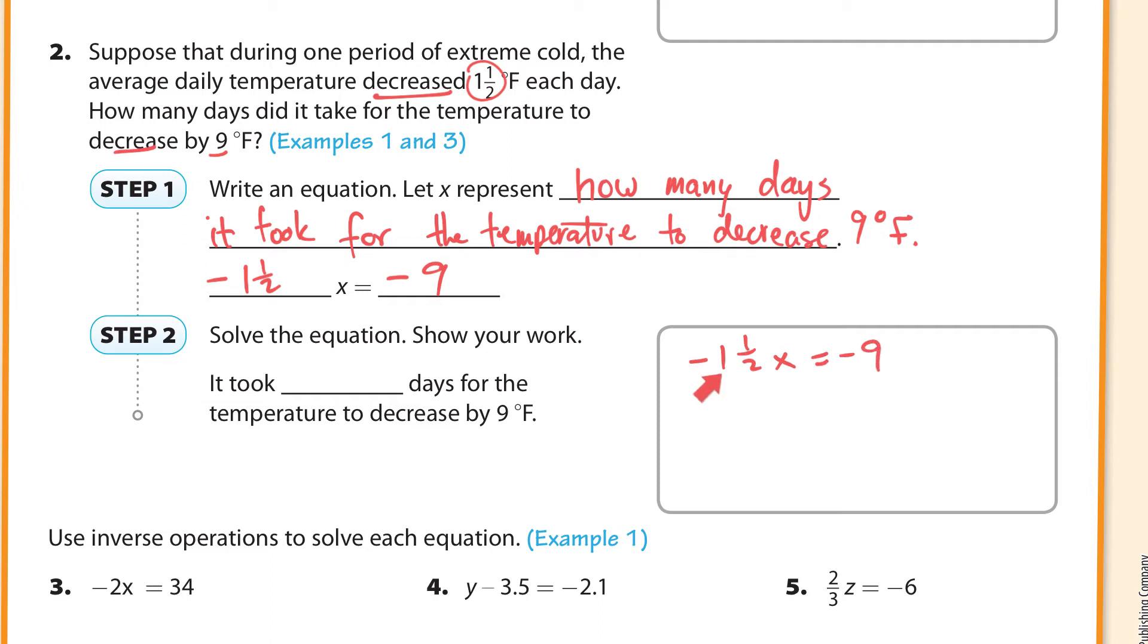I'm going to turn this 1.5 into a mixed number. You have to multiply 2 times 1, which is 2, plus 1 is 3. So we have 3 halves x, and it's negative. So you can put this negative on the top, middle, bottom. I think it would be good for us to put it on the bottom. And that's equals to negative 9. Now to solve this, let's multiply by the reciprocal. That's negative 2 over 3. And I have to do that on both sides. These all cancel. That's what you're going for. And you have x all alone. And we have to multiply negative 9 times negative 2 thirds. Now first off, negative times negative is positive. So our answer is positive. And then 9 times 2 is 18, and it's over 3. So it's 18 over 3, and 18 divided by 3 is 6. So it took 6 days for the temperature to decrease by 9 degrees Fahrenheit.